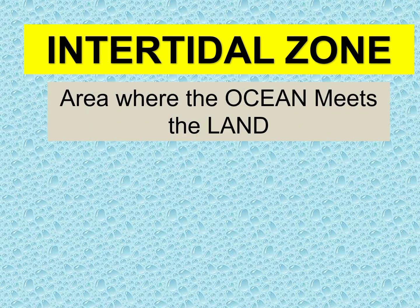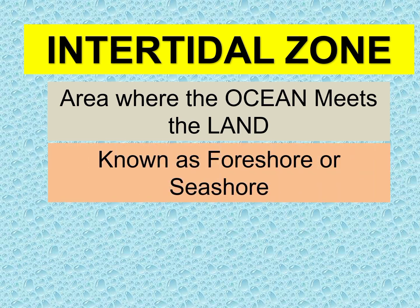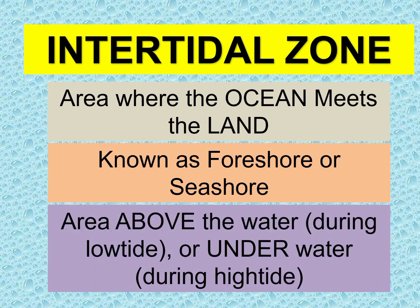Now let's move on to the intertidal zone. In your module, the intertidal zone is also discussed. What is an intertidal zone? It is the area where the ocean meets the land. If the estuary is where water meets water, the intertidal zone is where water meets land. It is known as the foreshore or seashore — in Filipino, dalampasigan or tabing dagat. It is the area above the water during low tide, or underwater during high tide. So in the intertidal zone, we have low tide and high tide.